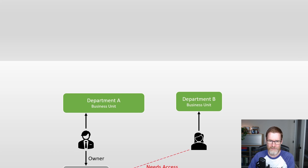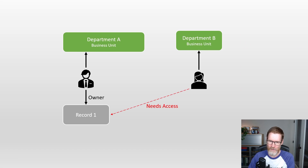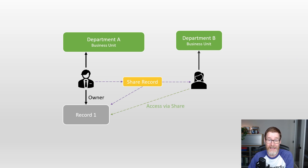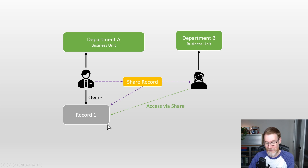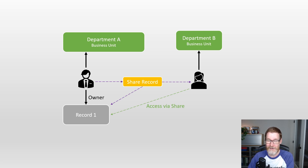One workaround is to simply share the record. This is probably the most straightforward for the user to do if they've got permission — so that user in Department A would just share the record with Department B and give them the access they need. The challenges with that are that it's quite hard to maintain. It's great for a small number of records, but if you do it at any scale, sharing can start to cause performance problems as well.